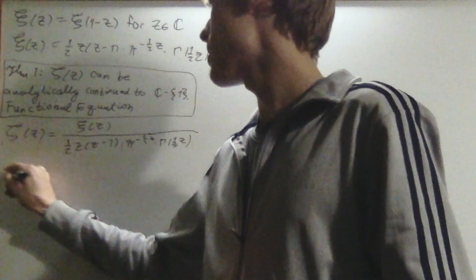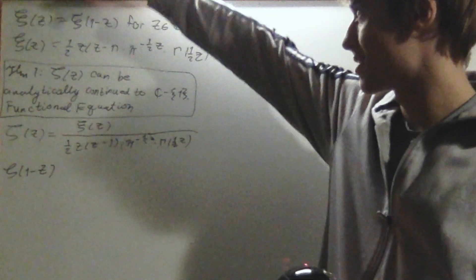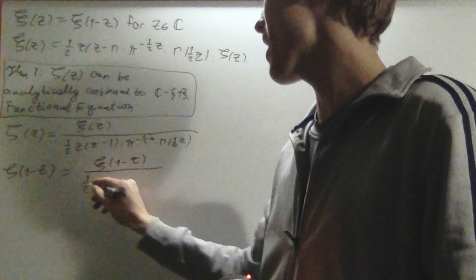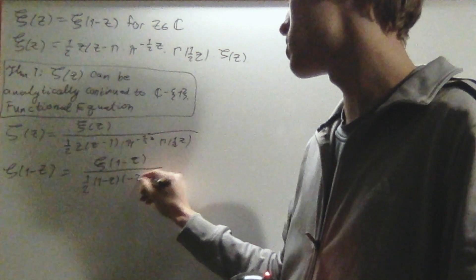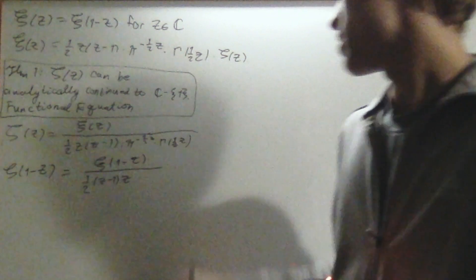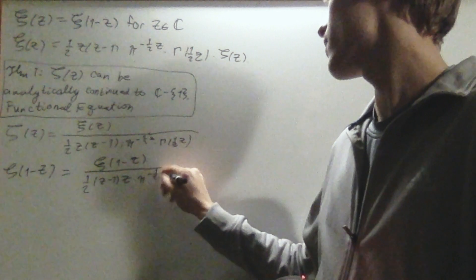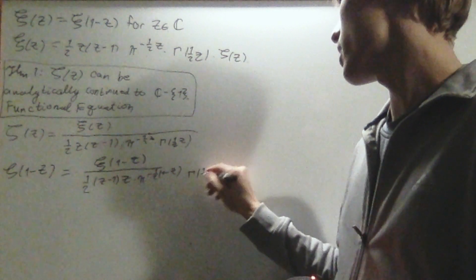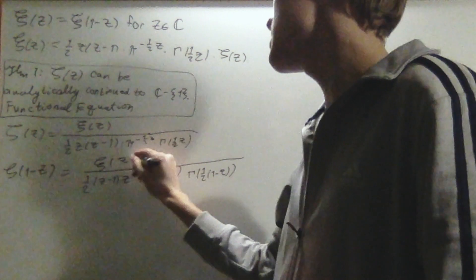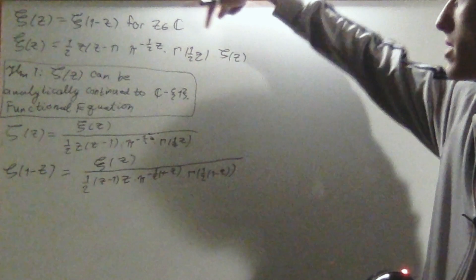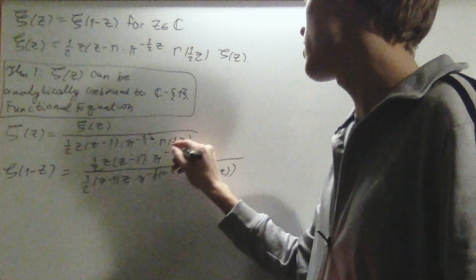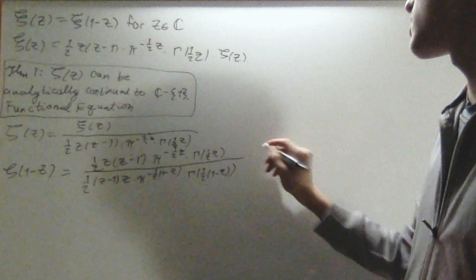Now I'm going to plug in 1 minus z. The reasoning is obvious — it's this functional equation fact. So we have xi of (1-z) divided by (1/2)(1-z)(1-z-1), which is just negative z, and that becomes z(z-1). Then times π^{-(1-z)/2}, times Γ((1-z)/2). We can use the xi identity to make the numerator just become xi of z, and of course xi of z is (1/2)z(z-1)π^{-z/2}Γ(z/2). So let's plug that in — there's an extra zeta which I'll put at the end.